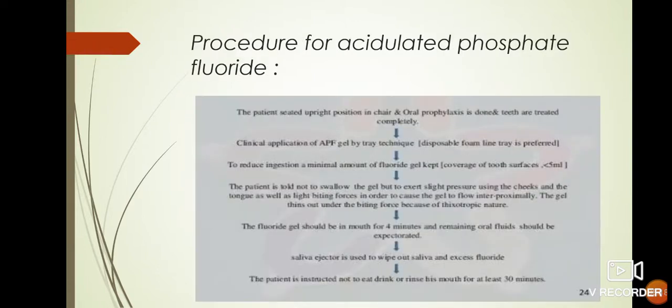Procedure for acidulated phosphate fluoride: the patient is seated upright in a chair and oral prophylaxis is done and the teeth are dried completely. Clinical application of acidulated phosphate fluoride gel by the tray technique using disposable foam-lined tray is preferred. To reduce ingestion, a minimal amount of fluoride gel is used to cover tooth surfaces. The patient is asked not to swallow the gel but to exert slight pressure using the cheek and tongue as well as light biting force in order to cause the gel to flow interproximally. The gel thins out under the biting force because of its thixotropic nature. The fluoride gel should be in the mouth for 4 minutes and remaining oral fluid should be expectorated. A saliva ejector is used to remove saliva and excess fluoride. The patient is instructed not to eat, drink, or rinse the mouth for at least 30 minutes.